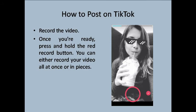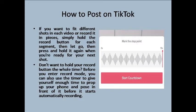Record the video. Once you are ready, press and hold the red record button. You can either record your video all at once or in pieces. If you want to fit different shots in each video, simply hold the record button for each segment, then let go and press and hold it again when you are ready for your next shot. If you don't want to hold the record button the whole time, you can also use the timer to give yourself enough time to prop up your phone and pause in front of it before it starts automatically recording.